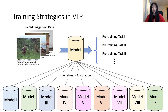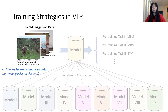Recall that the common practice for VLP is to first pre-train the model on paired image-text data with well-designed pre-training tasks, then adapt the pre-trained model to each downstream task. So how could we improve this training strategy? The first direction is: can we leverage unpaired data that widely exists on the web, even more than the paired image-text data?